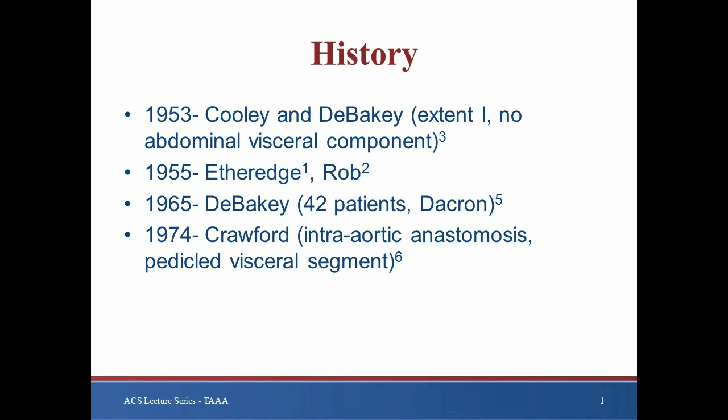Cooley and DeBakey's initial report of a descending thoracic aortic aneurysm, approached via a thoracoabdominal incision in 1953, predated Etheridge's manuscript as well. But this repair did not involve direct manipulation of the abdominal visceral arteries, and thus Etheridge remains the first surgeon to describe such a technique.